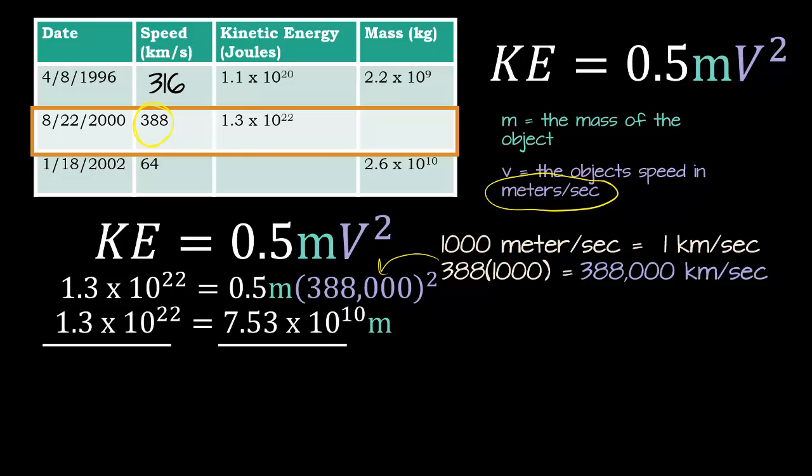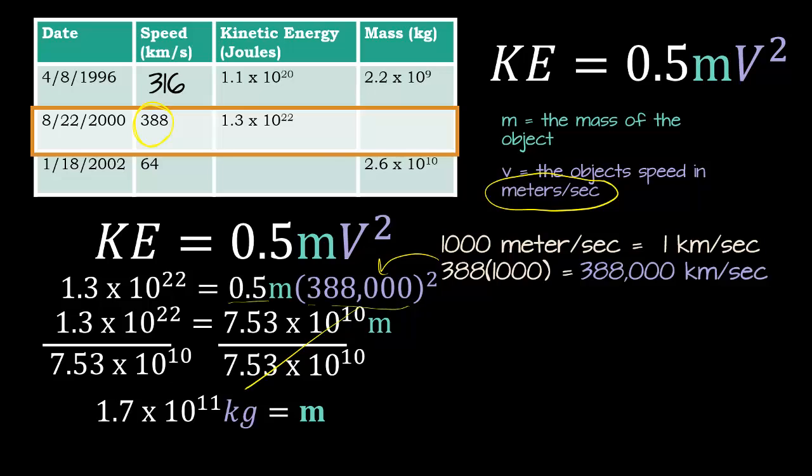The next step I did was take 0.5 times 388,000 squared. And then what we need to do is divide because I want to get m by itself. So it turns out the mass is 1.7 times 10 to the 11th kilograms. So we'll just put that right in there. And there we go.